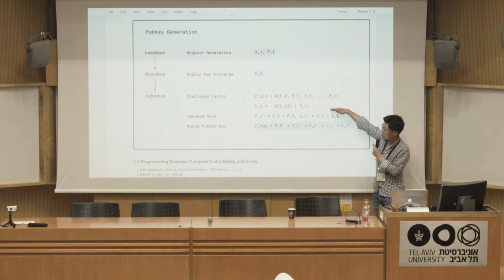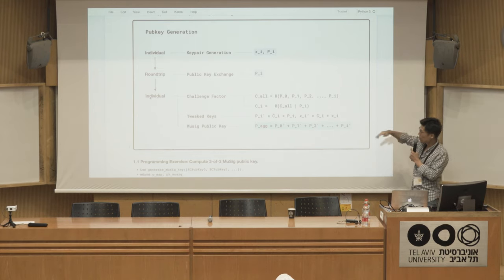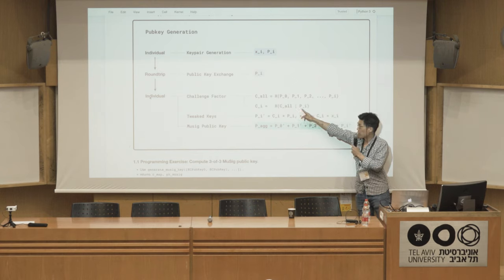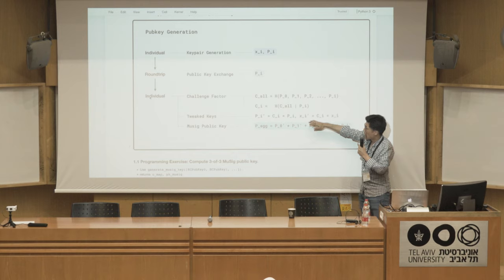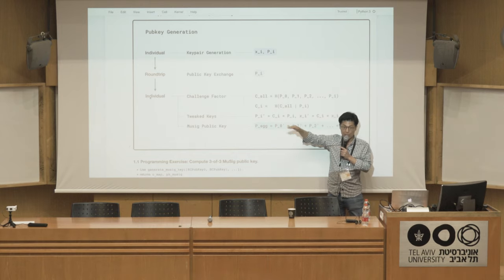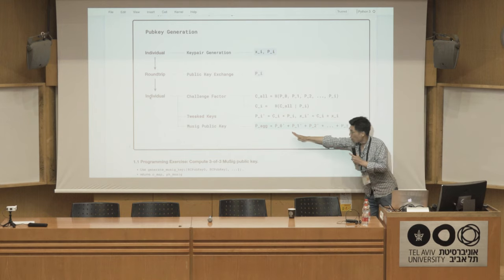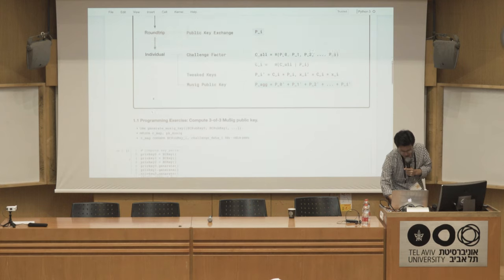The way we solve that is with a challenge factor unique to each pubkey. We concatenate all the pubkeys, then hash that again with the individual pubkey to obtain the challenge factor. We then multiply each key pair individually by its challenge factor, and once we've done that we can finally aggregate the public keys in a way that is not vulnerable to the key cancellation attack.